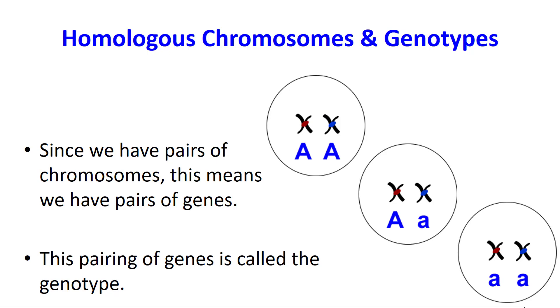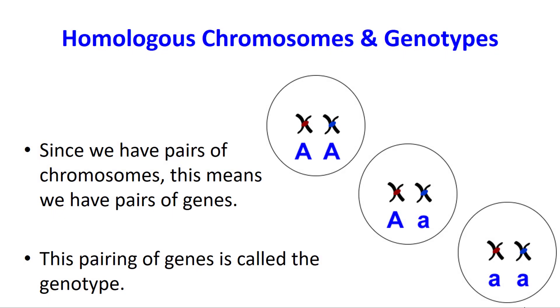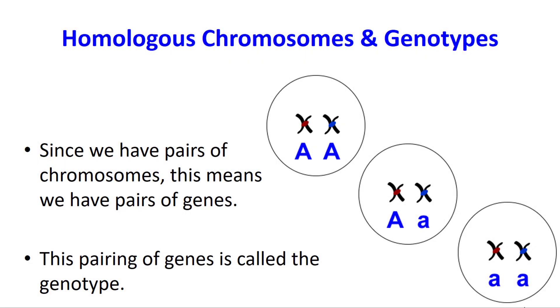You have two parents — mom and dad — and you got a chromosome from mom and you got a chromosome from dad. That also means you now have a pair of genes: you got one gene from mom and another gene from dad. This pairing of genes, we call the genotype.